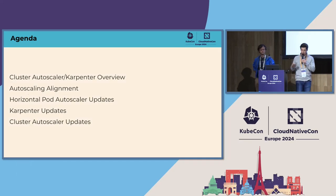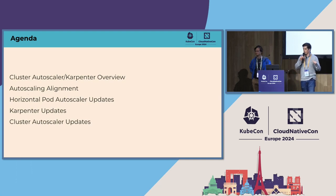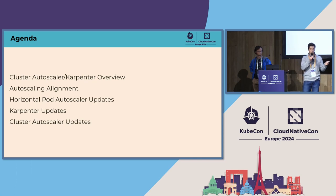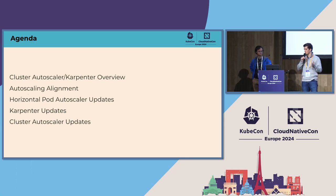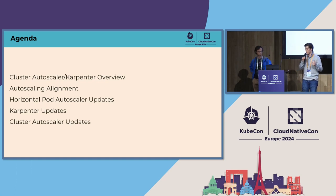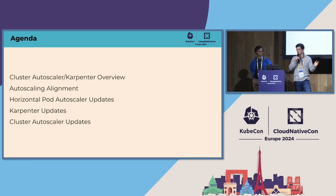We'll walk through a little bit of an agenda. We're going to give an overview of Cluster Autoscaler and Karpenter, and talk about some work we want to do to gain more alignment across features that look similar, as well as some API that would make migrating between the two forms of autoscaling much easier. Then we'll talk about project-specific updates: Horizontal Pod Autoscaler, Karpenter, and Cluster Autoscaler.